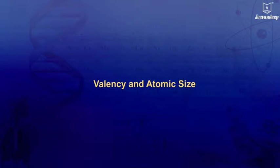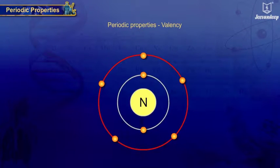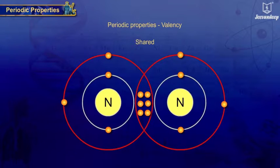Valency and atomic size - periodic properties. Valency of an element is the number of electrons lost, gained, or shared by an atom to obtain stable electronic configuration, that is eight or two electrons in the outermost shell in a chemical reaction.